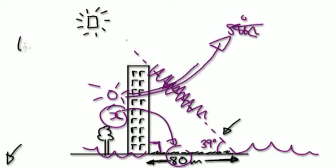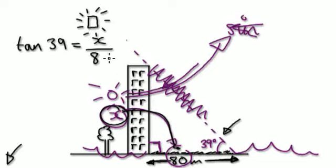So we know it's tan. So it would be tan the angle, which is 39, equals x over, remember, because we start here and then it shines down and it hits the adjacent. So it would be over 80.